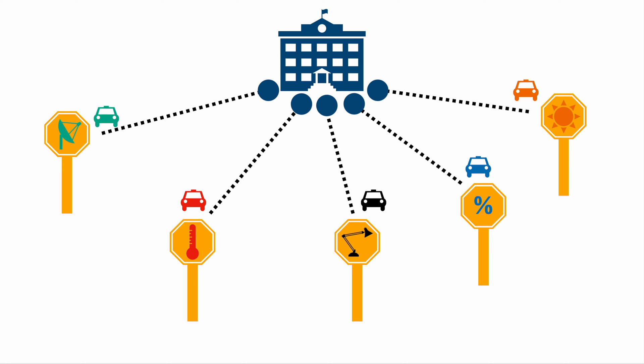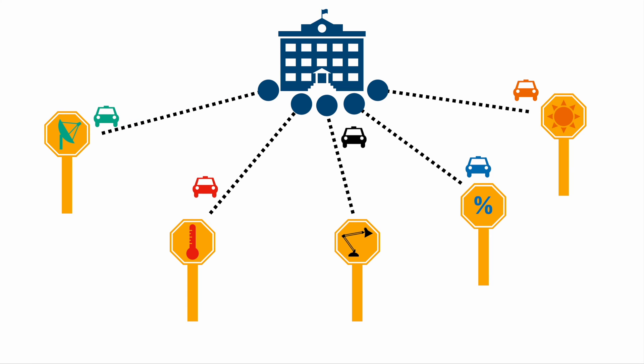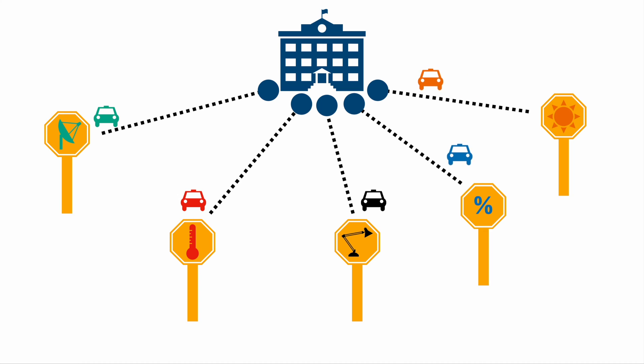Once we want to request information from the individual devices, we need to talk to each device separately. If we want to request information from all devices, we run to each device separately, requesting the information, receiving it, and then processing it. That's point-to-point wiring in a nutshell.